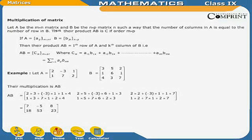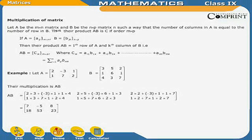For example, let matrix A equal to [2, minus 3, 1; 1, 7, 2] and matrix B equal to [3, 5, 2; 1, 6, 1; 4, 3, 7]. Their product AB is computed by multiplying corresponding rows and columns, giving the result matrix [7, minus 5, 8; 18, 53, 23].